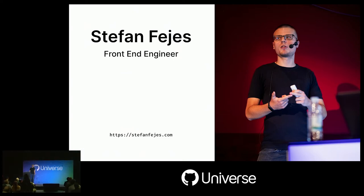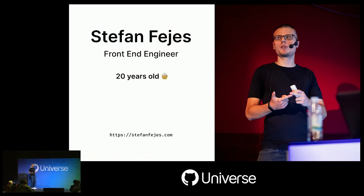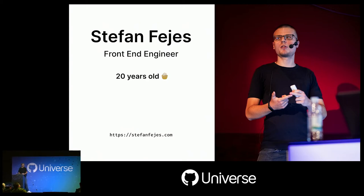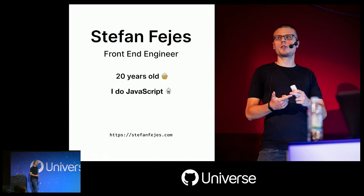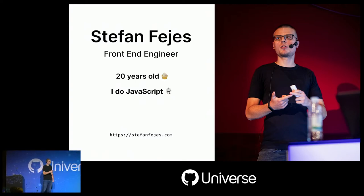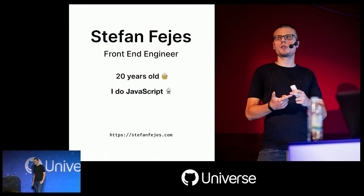I know the bio says I'm 19 years old, but as you all know, time flies, so I had to turn 20 years old at some point. As a front-end engineer, I mostly work with JavaScript, and I usually joke that I have a black belt in JavaScript — that's the reason why I see this karate emoji.